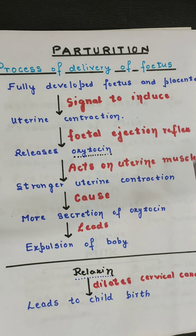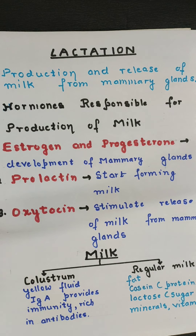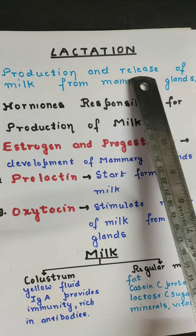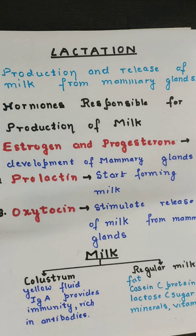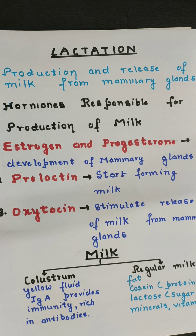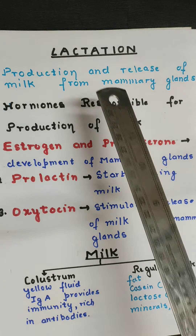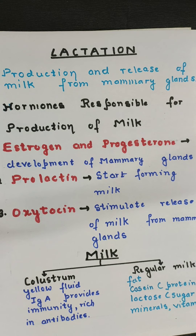The second topic is lactation. Lactation means the production and release of milk from the mammary glands. The word 'lactation' comes from 'lactose' — lactose is milk sugar, a carbohydrate present in milk. So this process of milk production and release is known as lactation.